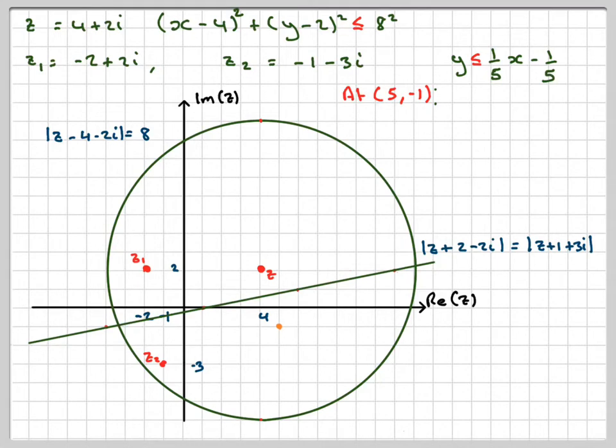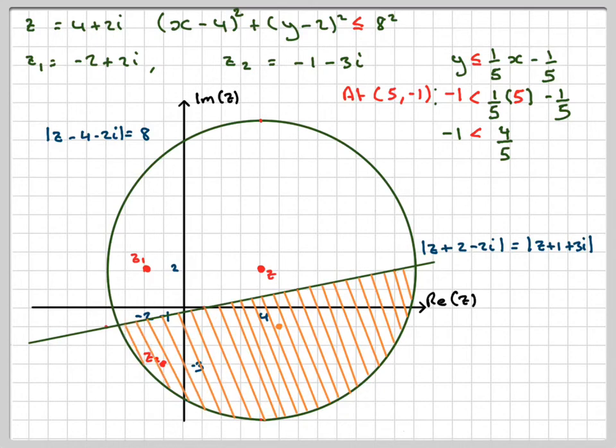So y is -1, and we've got 1/5 of 5 minus... 1/5 of 5 is 1, 1 - 1/5 is 4/5. Well, -1 is less than 4/5, we wanted less than or equal to, so that point was in the region, and because we're shading the region that we want, that will be that region.